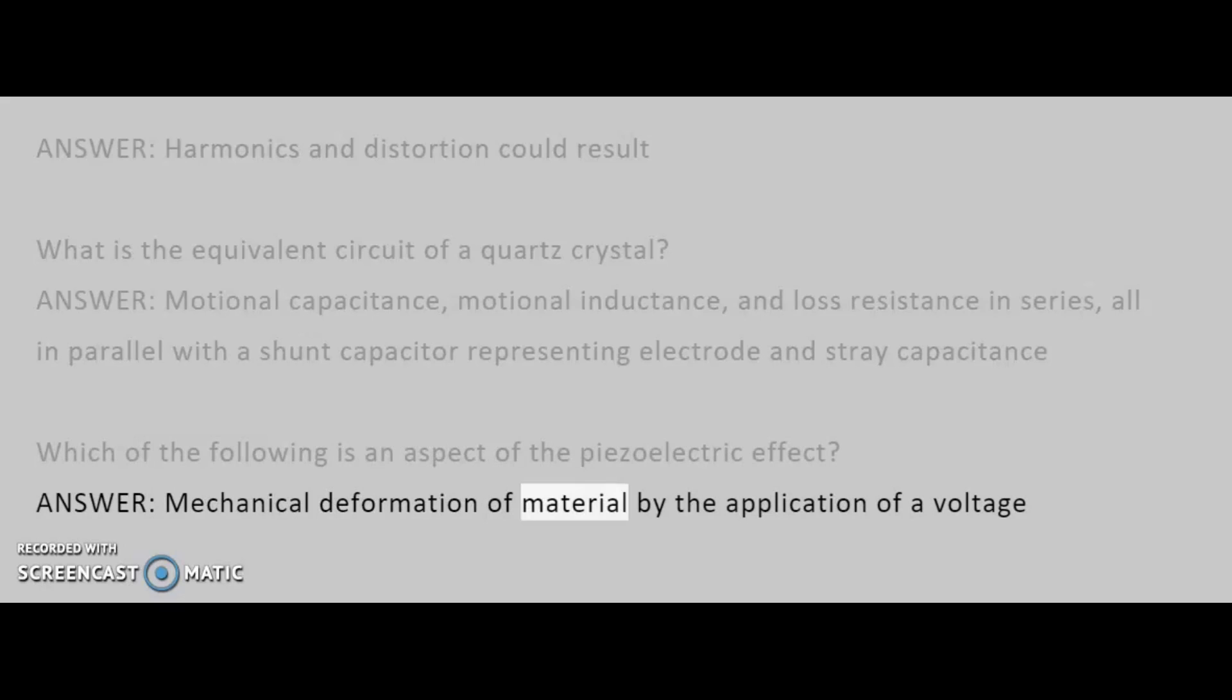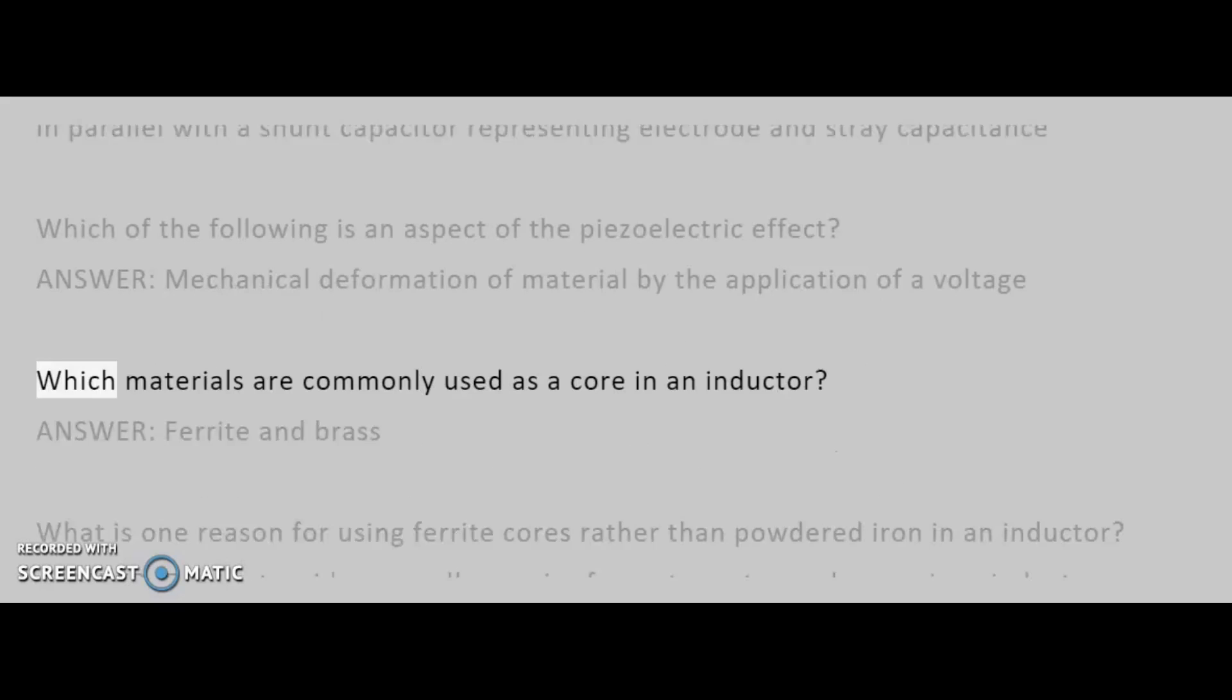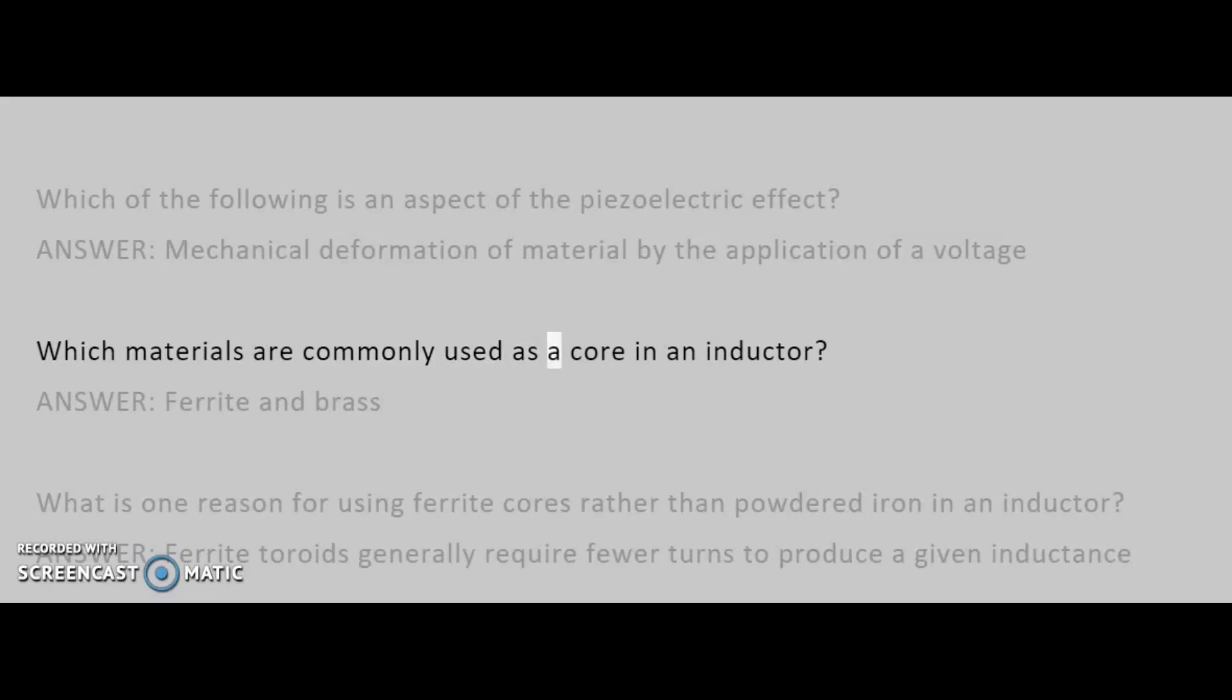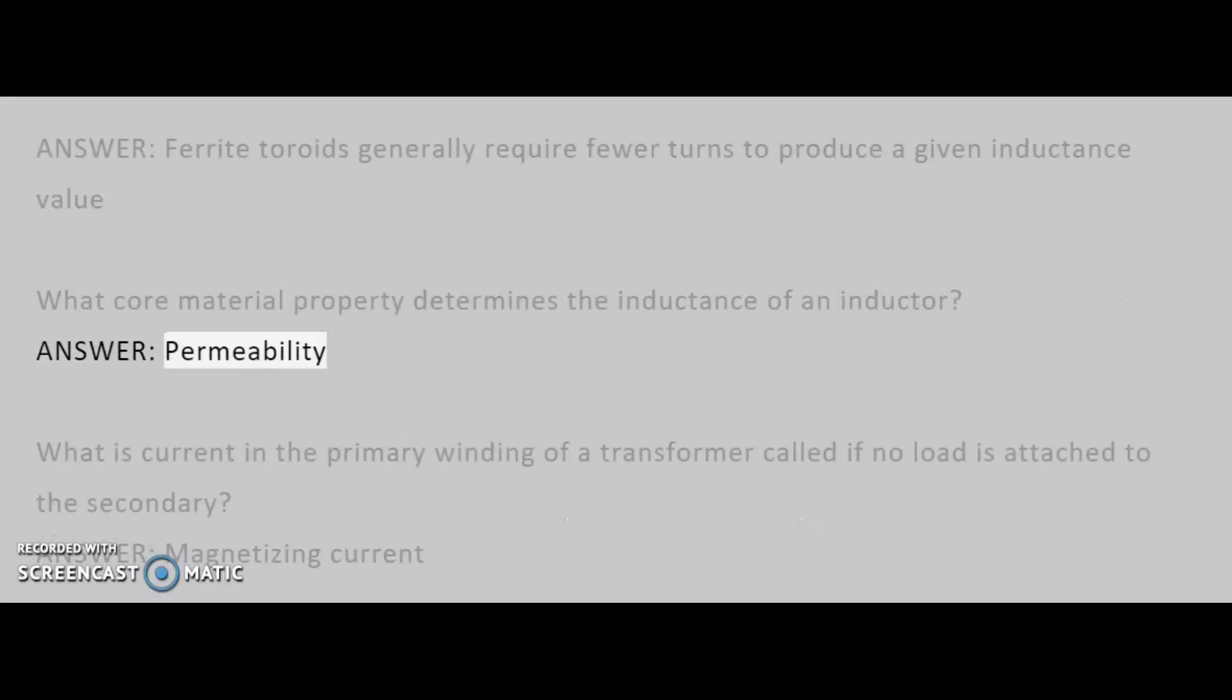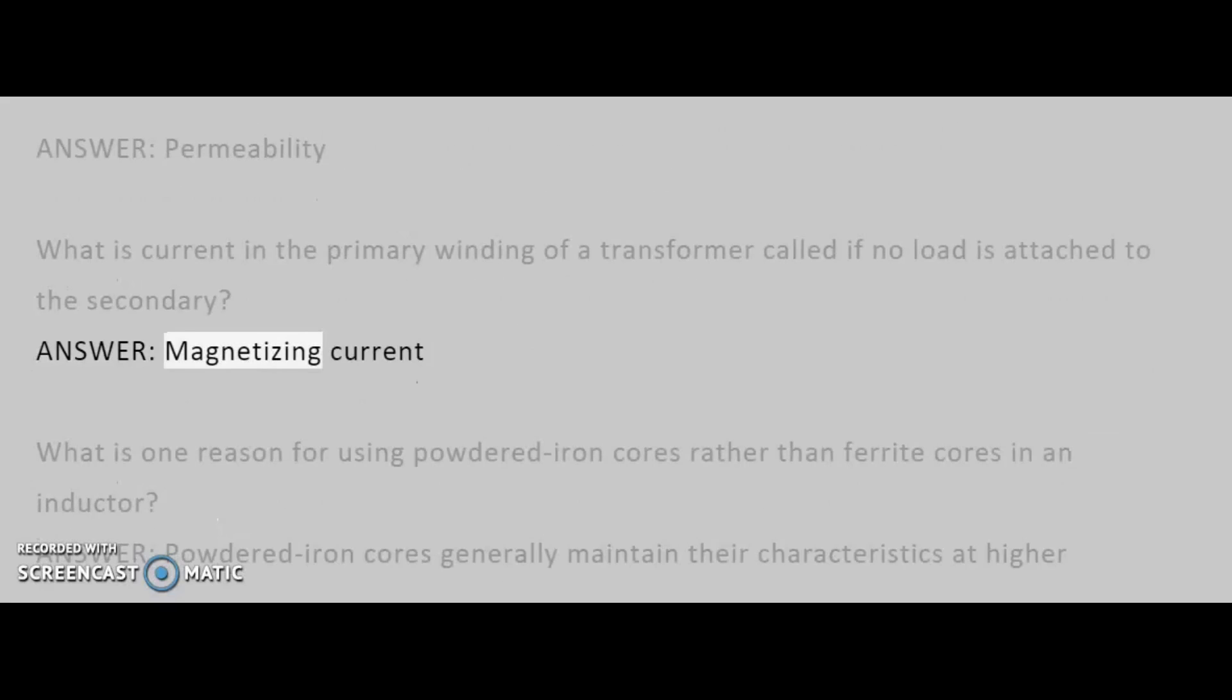Which materials are commonly used as a core in an inductor? Answer: ferrite and brass. What is one reason for using ferrite cores rather than powdered iron in an inductor? Answer: ferrite toroids generally require fewer turns to produce a given inductance value. What core material property determines the inductance of an inductor? Answer: permeability. What is current in the primary winding of a transformer called if no load is attached to the secondary? Answer, magnetizing current.